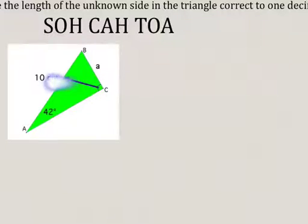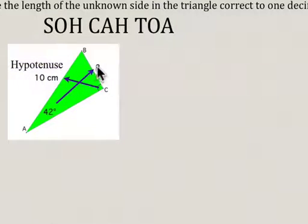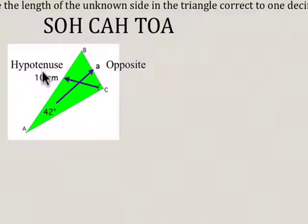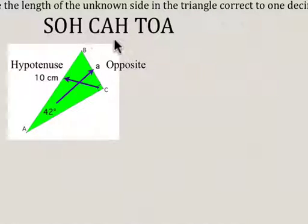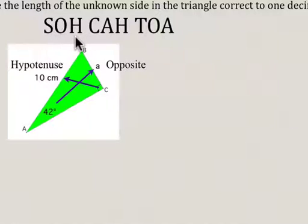Remember that the side opposite the right angle is our hypotenuse, and for angle A, the side opposite of that is side A. So A is our opposite, and our hypotenuse is the 10 centimeters. Since we're dealing with the opposite and the hypotenuse, we look at SOHCAHTOA, and opposite over hypotenuse is sine.